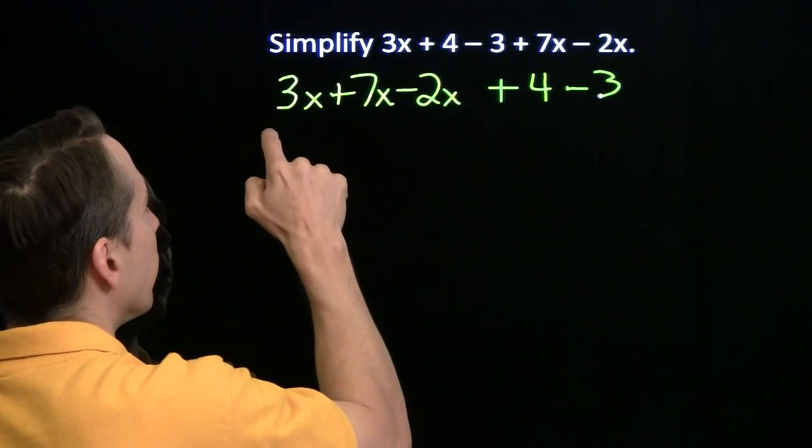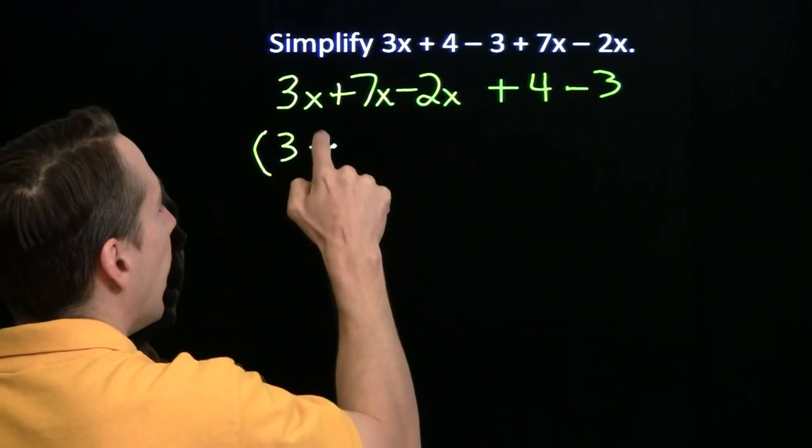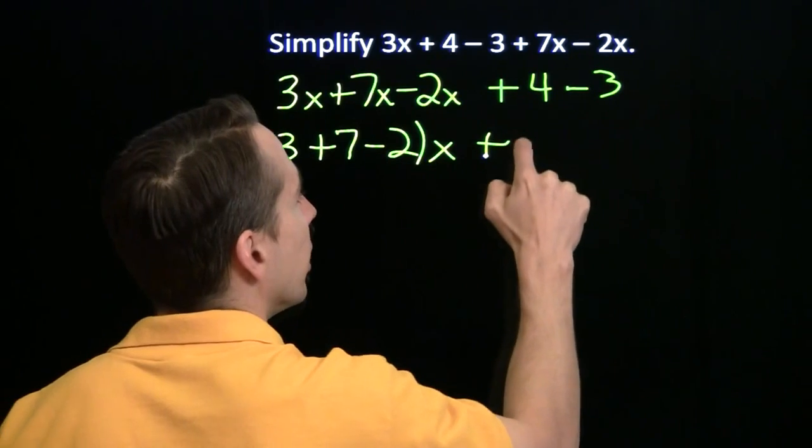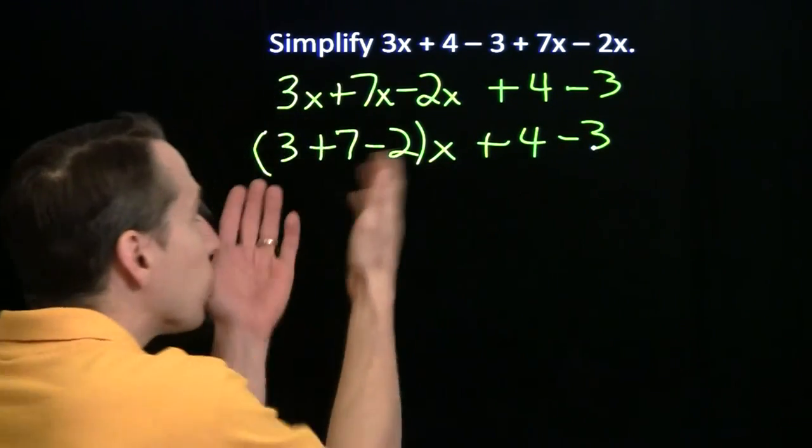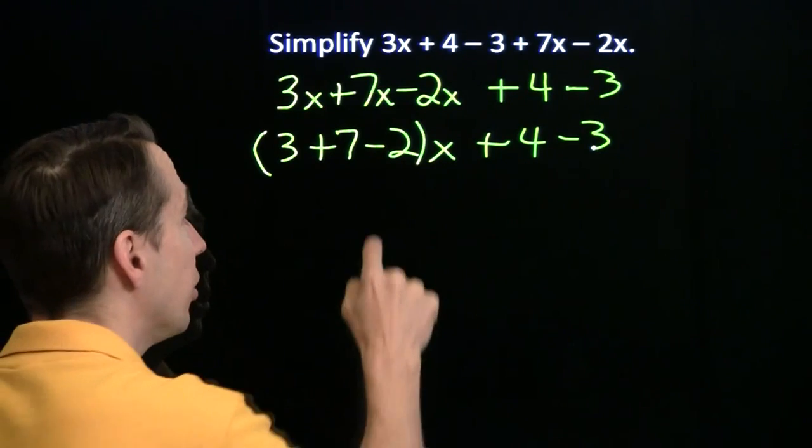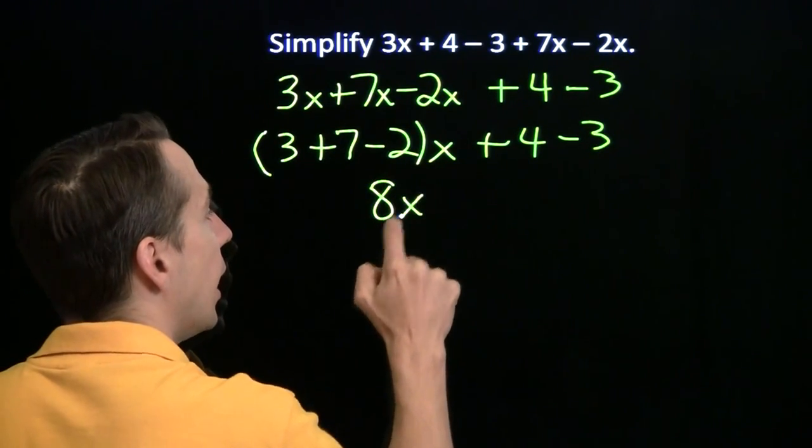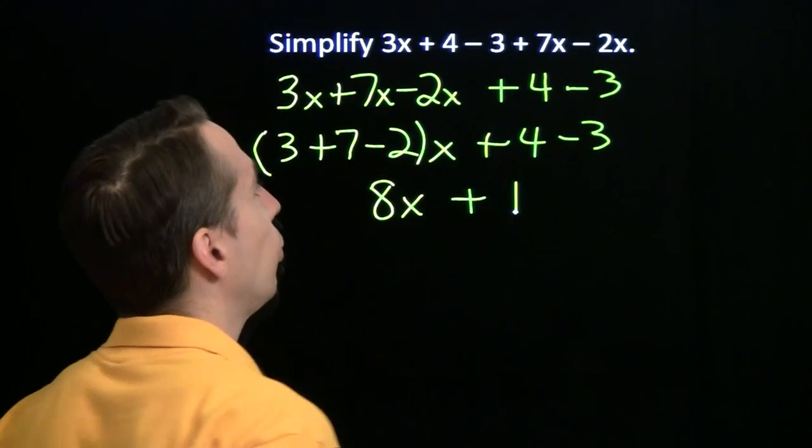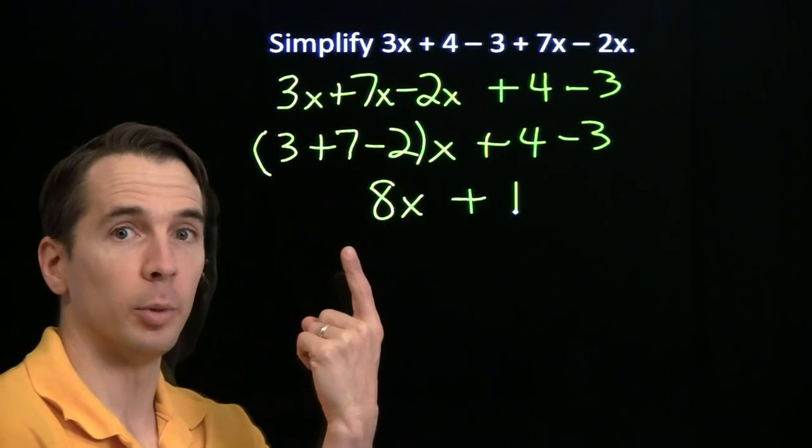And the reason we can do that is we can factor out the x and write it like this. That's why we can combine all these terms and write them as 3 plus 7 minus 2, which is 8 times x. Then, of course, 4 minus 3, that's just 1. So we know how to handle this with just 1 variable.